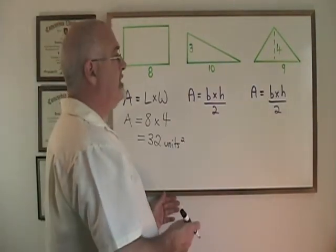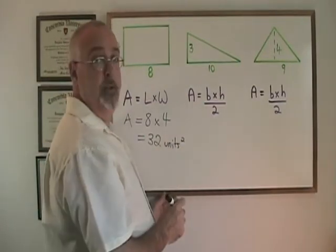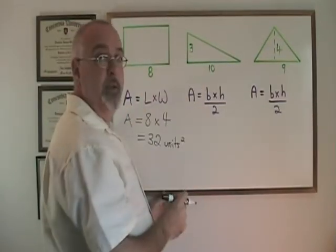In the triangle, we have base times height over 2 to give us our area. The base, I'm going to say the 10 is the base and the 3 is the height.